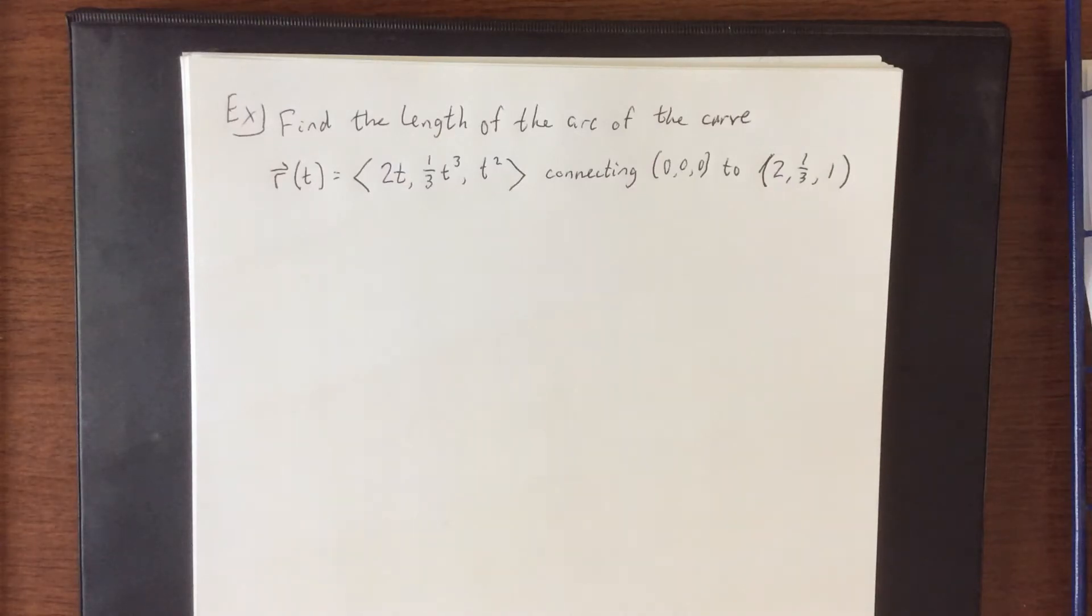For an example of an arc length problem, I'd like to find the length of the arc of the space curve R(t) equals, with component functions 2t, one-third t cubed, and t squared, connecting the ordered triple (0,0,0) to the ordered triple (2, 1/3, 1).